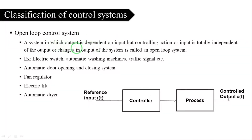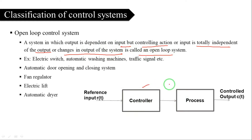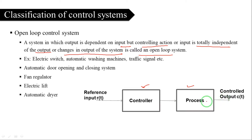First of all, what do you mean by an open-loop control system? A system in which the output is dependent on input, but the controlling action or input is totally independent of the output, or changes in the output of the system, is called an open-loop system. The input is totally independent of the output.